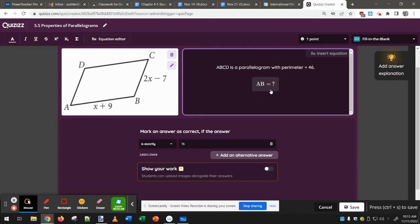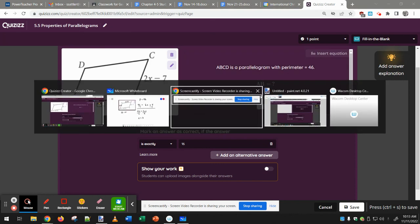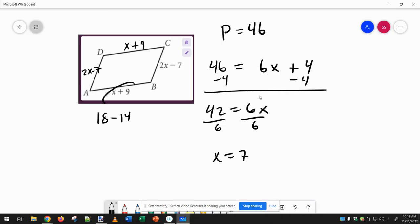The question asks for ab, though, so ab is this side, so if I plug in 7 for x, ab equals 16.